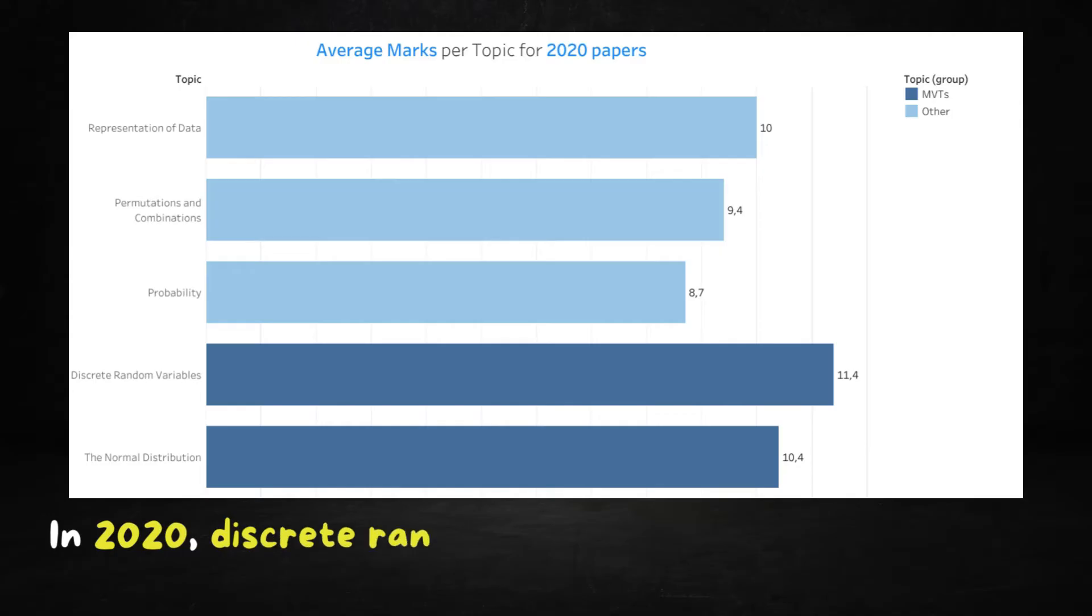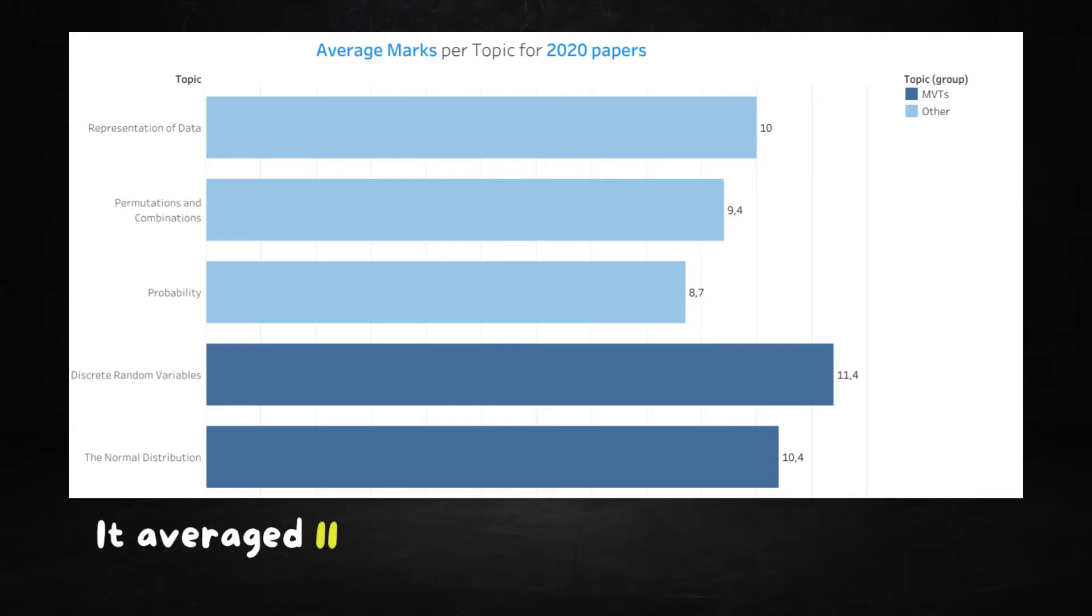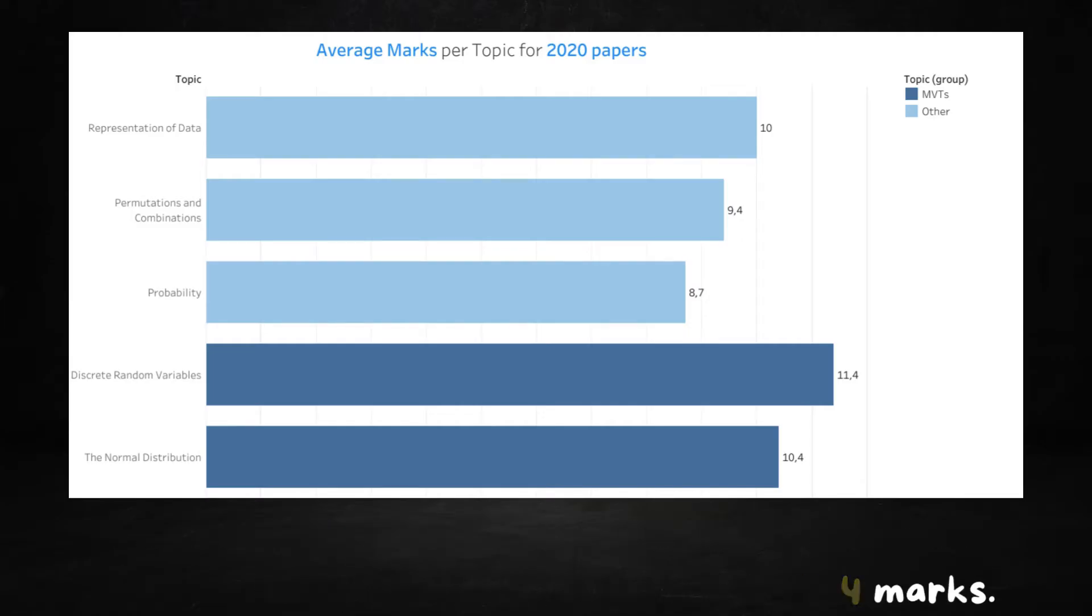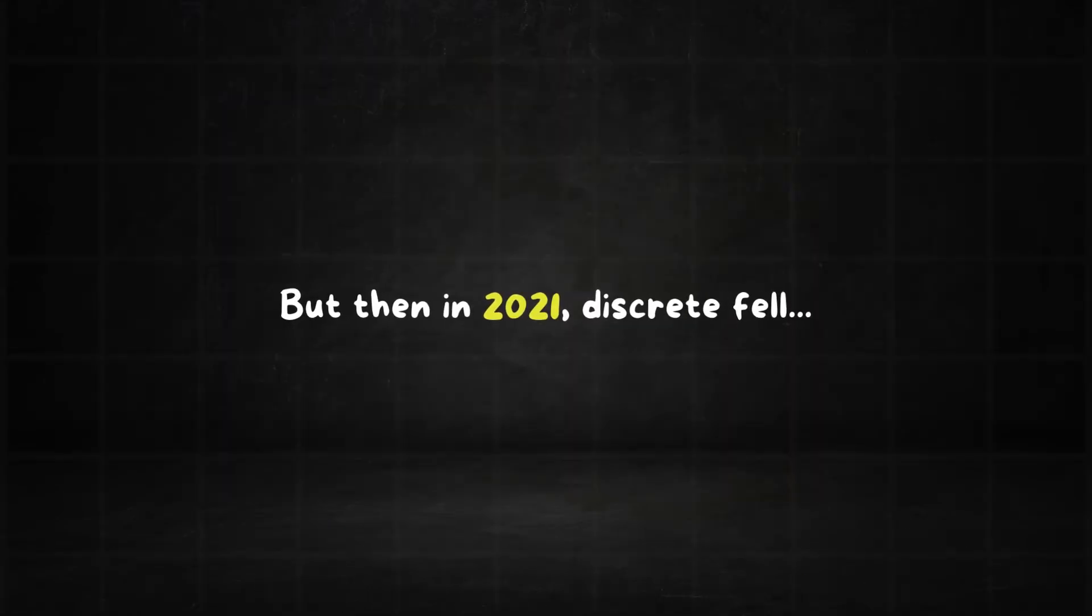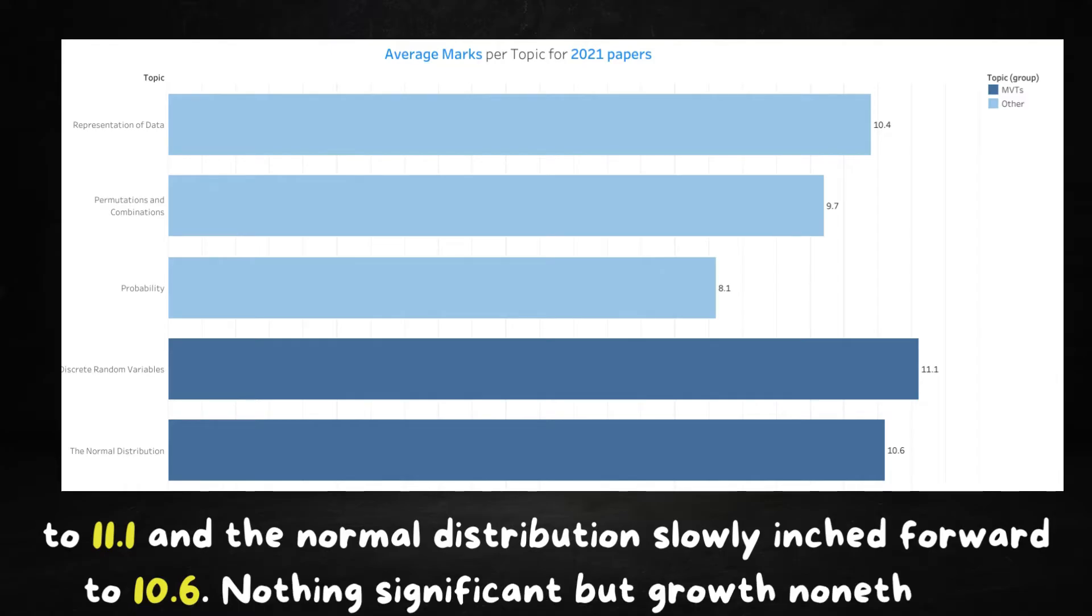In 2020, discrete random variables literally obliterated every other topic by at least one full mark. It averaged 11.4 marks per paper and second place normal distribution was far back with 10.4 marks. But then in 2021, discrete fell to 11.1 and the normal distribution slowly inched forward to 10.6. Nothing significant but growth nonetheless.